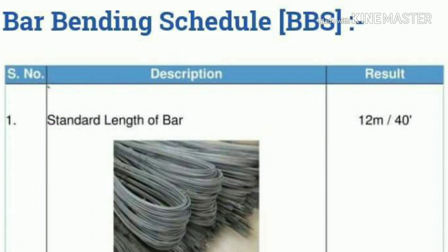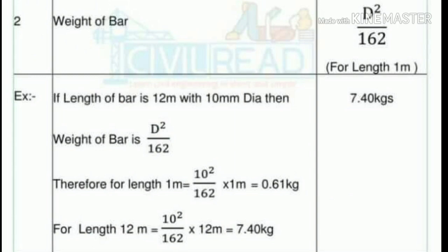The first thing is, we will learn how long the bar is and how long the weight is. There are 40 feet in the weight. This is the form of the weight. The form of the weight is 162.